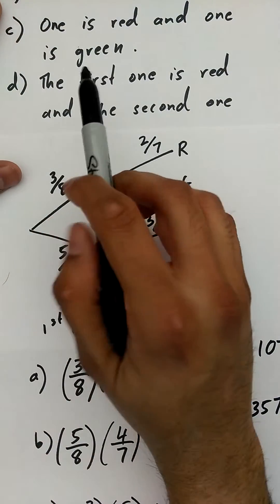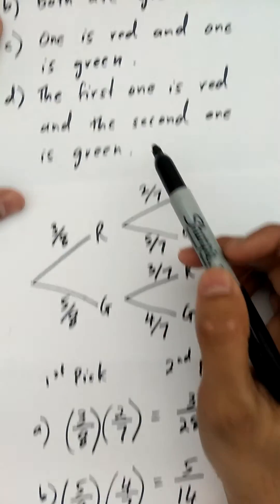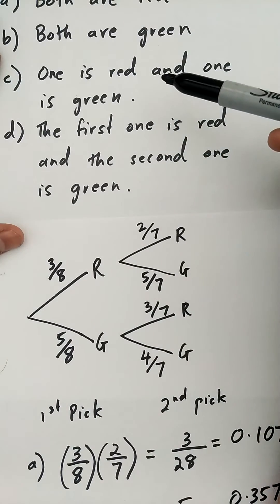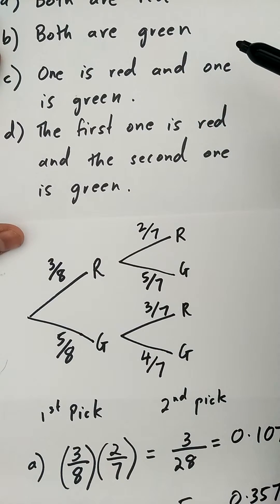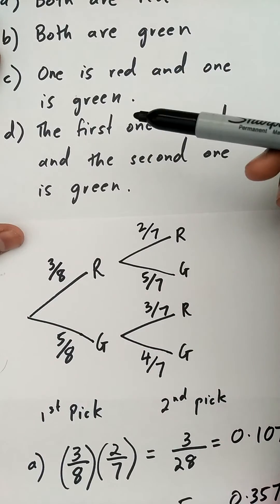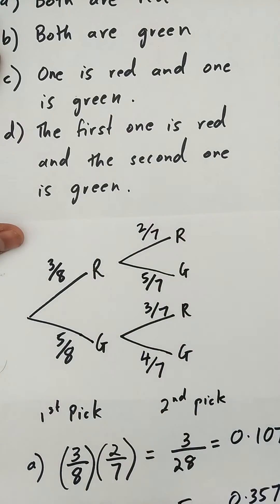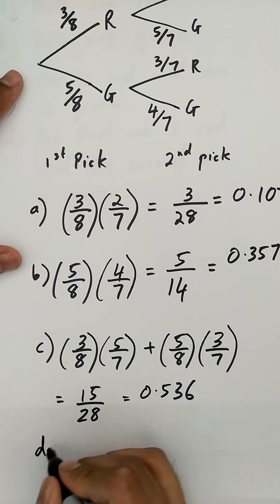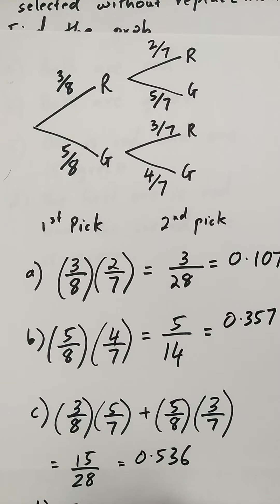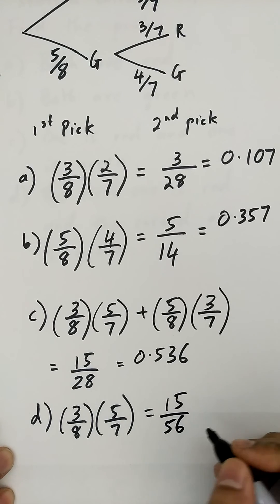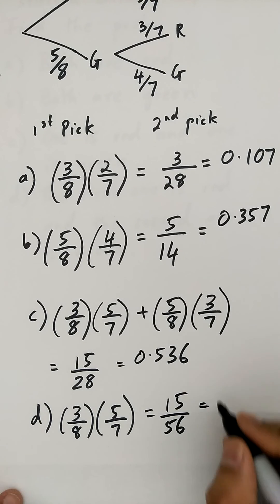For Part D, the probability that the first one is red and the second one is green. The key difference from Part C is that in Part C the order doesn't matter — it could be red then green or green then red. But in Part D, a specific order is given: first red, second green. So you can only follow the red-then-green path. The probability is just three over eight times five over seven, which equals fifteen over fifty-six, or approximately 0.268.